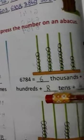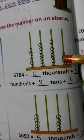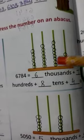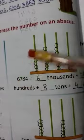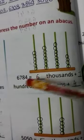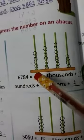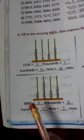Next, 6784. First write it. 1s place has 4, so 4 beads. Next, 8 in the 10s place, 8 beads. Next 7, next 6. So 6 thousands, 8 tens, 4 ones. 6784.